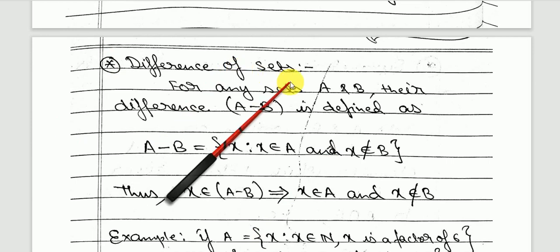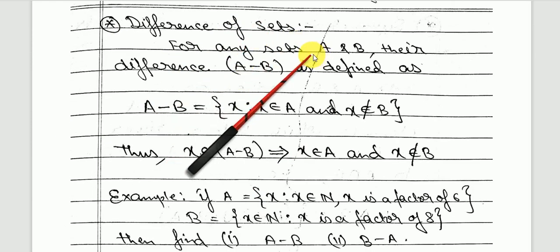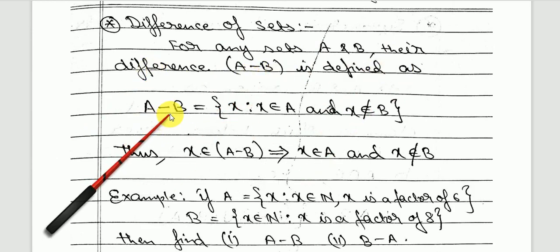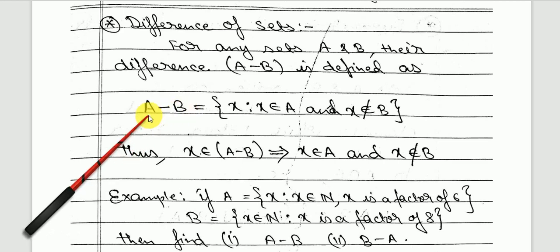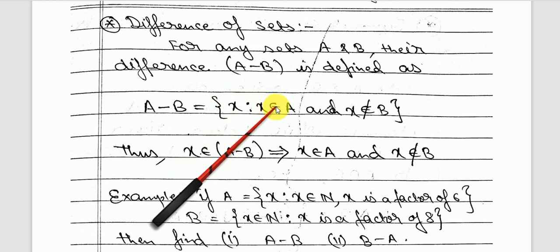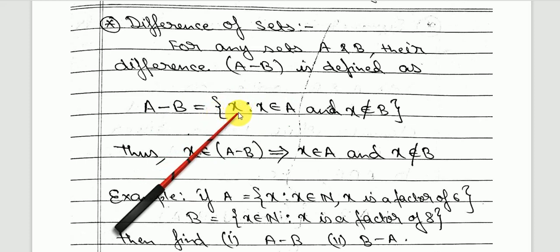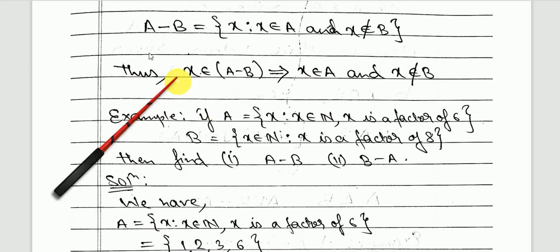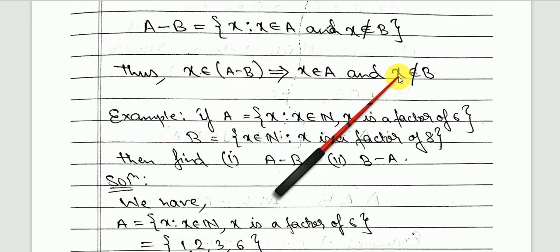Next, difference of sets. For any sets A and B, their difference A minus B is defined as the set containing all elements lying only in set A. Mathematically, if x belongs to A minus B, that means x belongs to A and x is not in B.